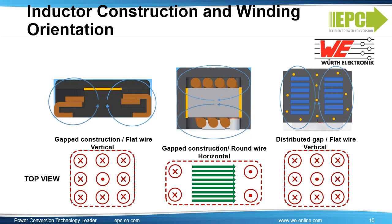Here we show three different inductor constructions, looking at the magnetic field path and cross pattern through the PCB. For inductors with vertical winding constructions, the magnetic field goes into the PCB through the edges and loops back through the center. For inductors with horizontal winding construction, the field goes through the PCB on one side, then runs parallel underneath the part and loops back on the other side. The magnetic field path is something to consider when placing vias, ground planes, and other components around the switching area to achieve the best possible EMI performance.